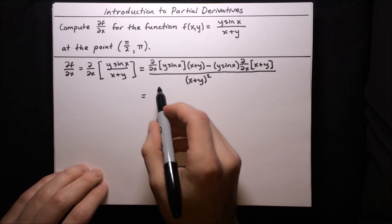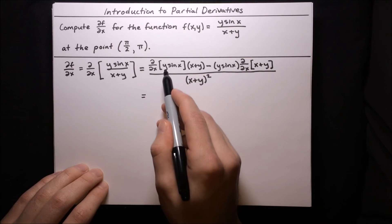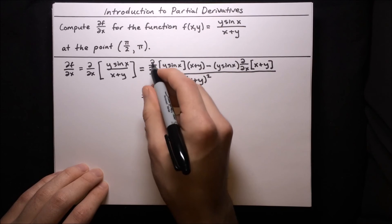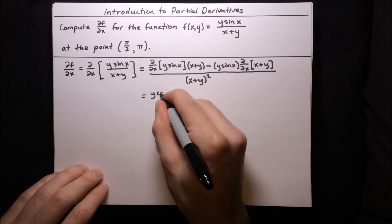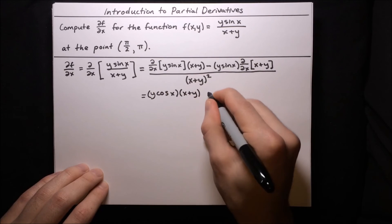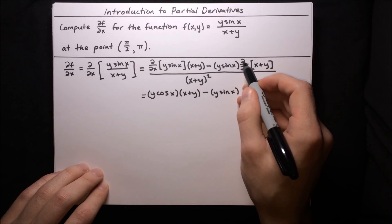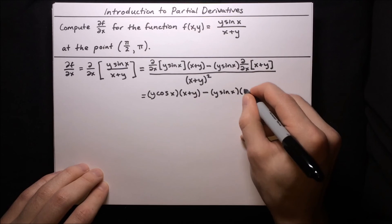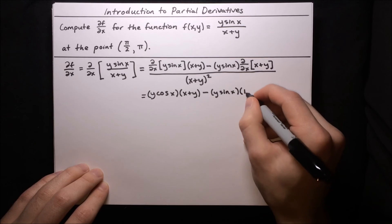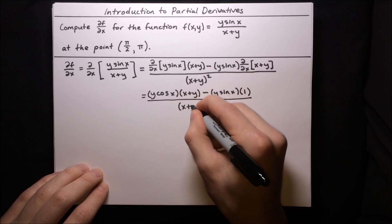Simplifying: the partial derivative of y·sin x with respect to x — y is a constant, so that's y·cos x. That times (x + y), minus y·sin x times the derivative of the denominator. For the denominator x + y: the derivative of x with respect to x is 1, and y is a constant so its derivative is 0, giving 1 overall. So we have [y·cos x·(x + y) − y·sin x·1] all over (x + y)².